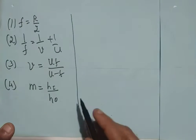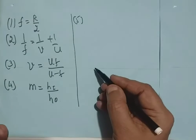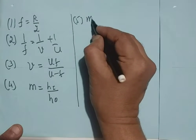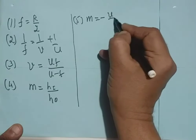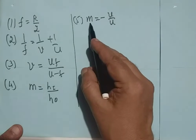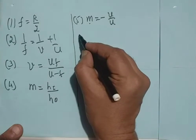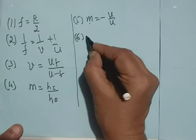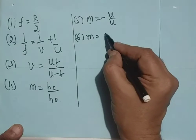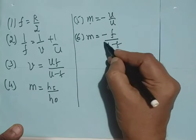The fifth formula is minus V by U, the same linear magnification. From the fifth and third formulas, we can also write another formula for magnification in terms of focal length and object distance, that is minus F by U minus F.